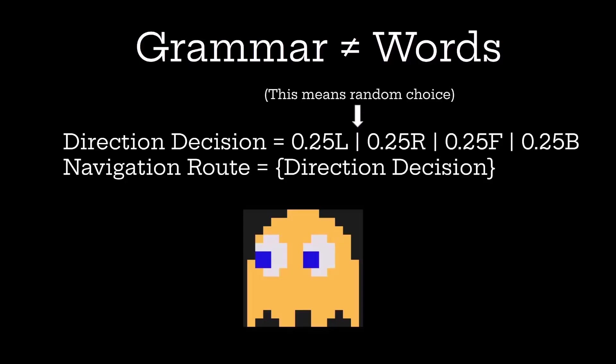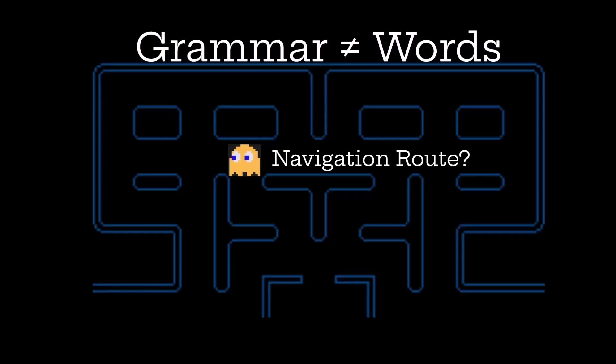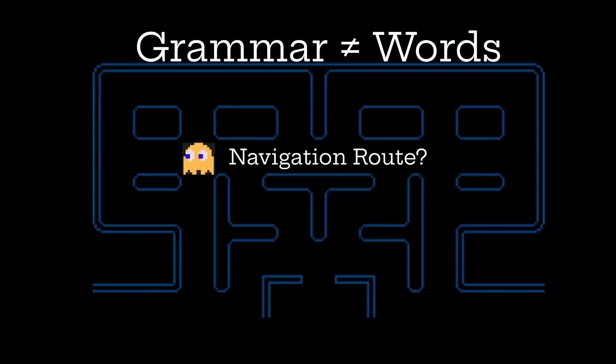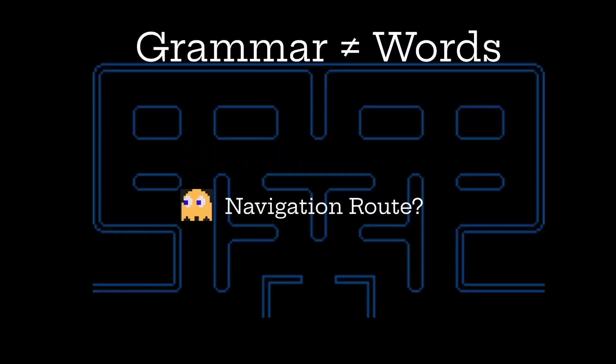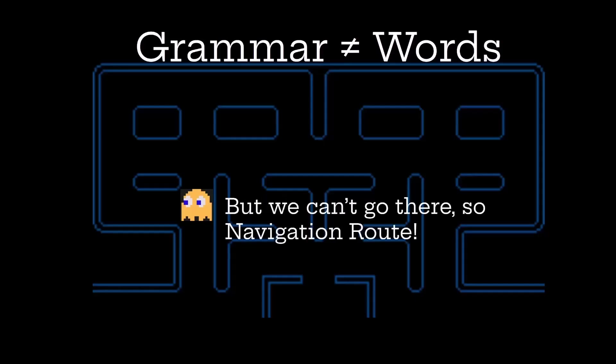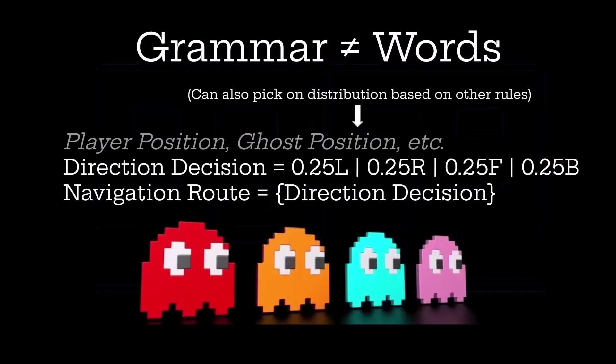The way this might be used in a game is: the ghost comes to an intersection and asks its grammar for a navigation route. The navigation route randomly chooses — say, go left — and the ghost continues doing this until it reaches a direction it cannot take. For example, if it can't go right, another advantage of grammars is you can just keep retrying — if that option isn't available, you simply move to the next one.